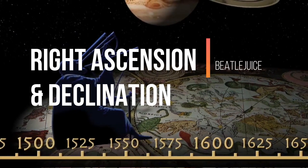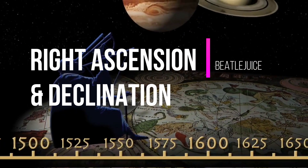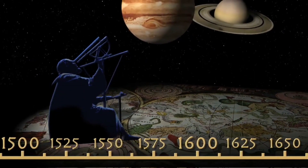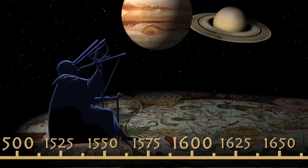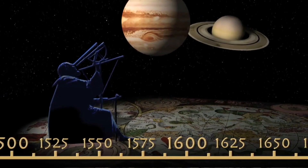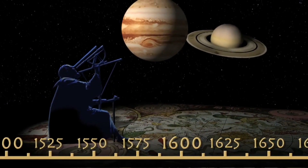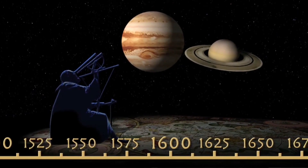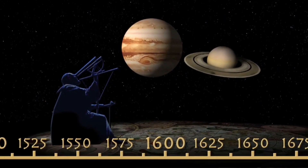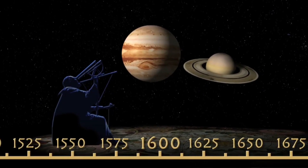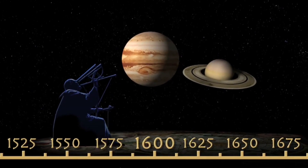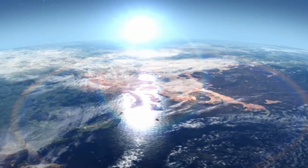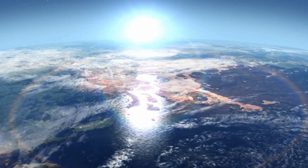For thousands of years, astronomers have used countless successful and unsuccessful methods of tracking and mapping celestial objects in our night sky. As history continued, astronomers shared notes and began realizing the necessity for a standard of tracking celestial objects relative to Earth.